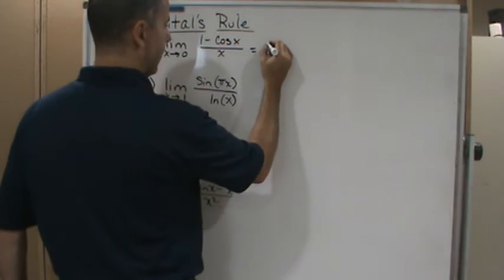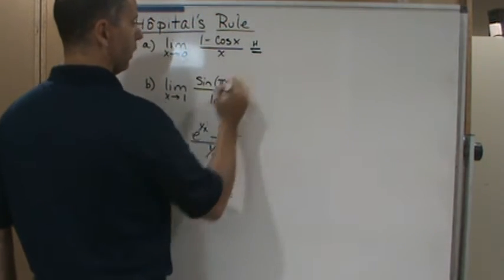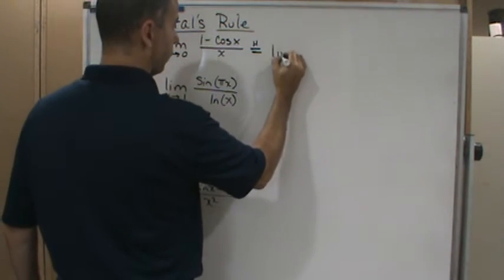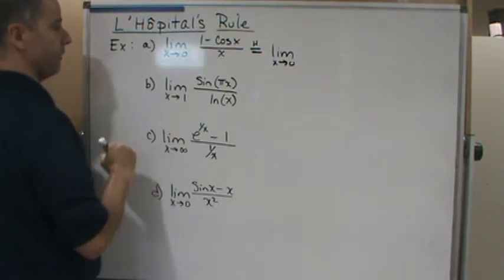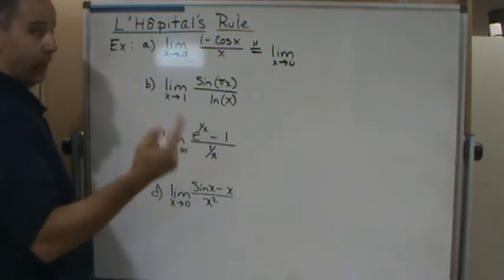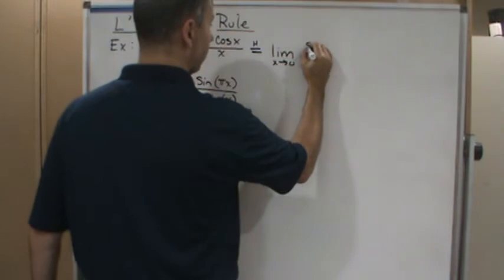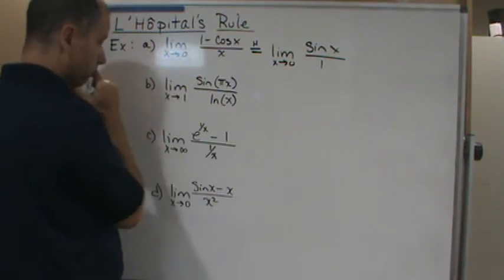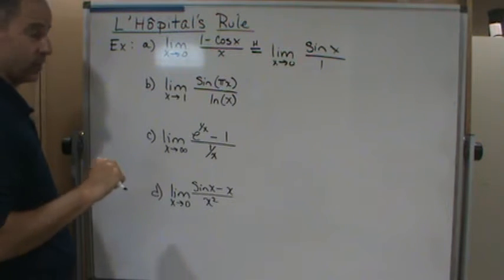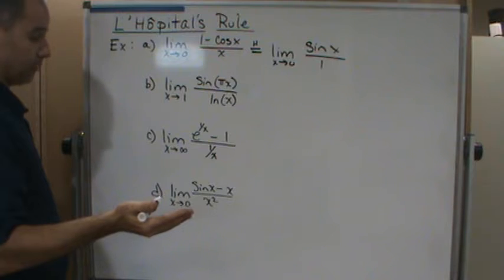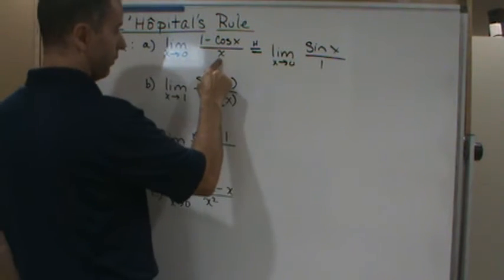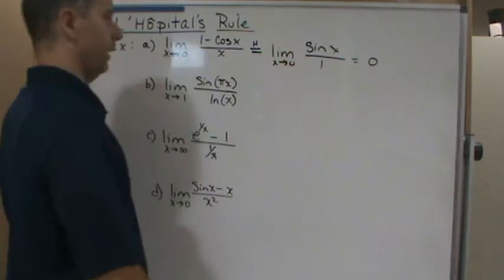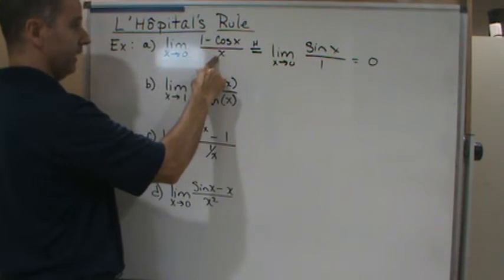So I'm going to write this as equal to — I'll put a little 'h' over the equal sign as an indication that I'm using L'Hôpital's rule. By L'Hôpital's rule, this is the limit as x approaches 0. The derivative of the top: the derivative of negative cosine is sine, so I get sine x over 1. As x approaches 0, this equals 0. So the original limit is 0.